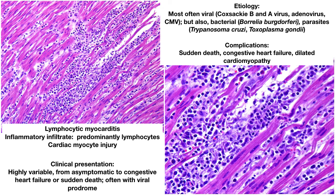The characteristic histologic features are an inflammatory infiltrate which is predominantly lymphocytes. You can see that in both views, but on the right you can see the lymphocytes really well, and there is also cardiac myocyte injury. With the amount of infiltration present, you can see that cardiac myocytes have most likely been damaged and lost.